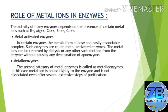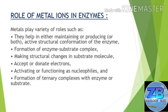The metal ions can be removed by dialysis or any other such method from the enzyme without causing any denaturation of the apoenzyme. The second category is metallo enzymes. In this case, the metal ion is bound tightly to the enzyme and is not dissociated even after several extensive steps of purification.